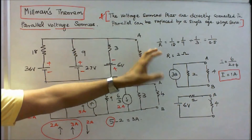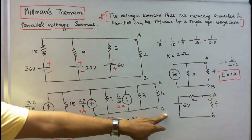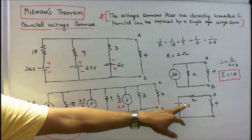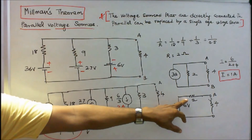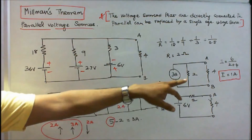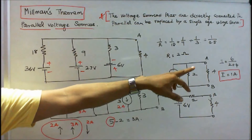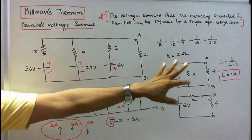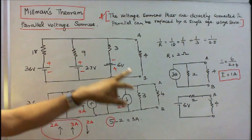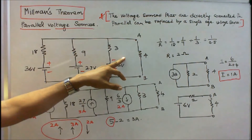The equivalent current source is converted into an equivalent voltage source: 3 Amps × 2 Ohms equals 6 Volts with 2 Ohms in series. Therefore I equals 6 divided by (2 plus 4) equals 6/6 equals 1 Amp. Current through the 4 Ohm resistor is 1 Amp.